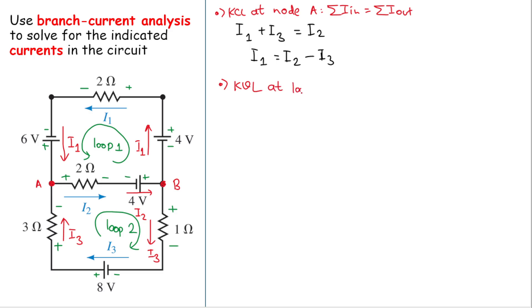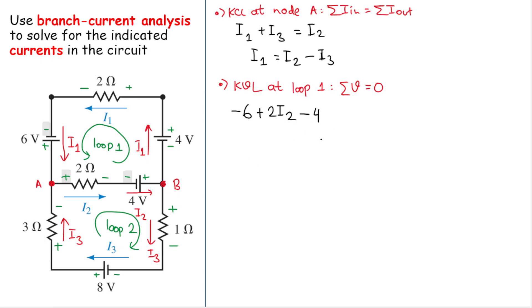KVL at loop one: the sum of the voltages equals zero. Starting from the 6-volt source — the loop enters from the negative terminal, so we have minus 6. Moving to the 2-ohm resistor, the loop enters from the positive terminal, so we have plus 2 times i2. Then another battery — loop enters from the negative terminal — so minus 4 volts.